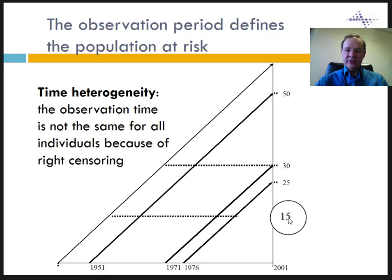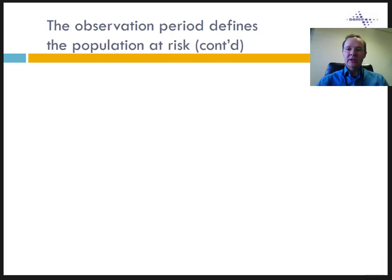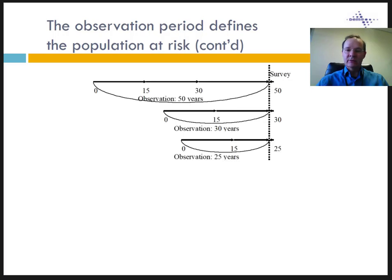This is a fundamental concept that we will use again and again in event history analysis. The three individuals have been observed for 50 years, 30 years, and 25 years. We can represent the diagonal lifelines from the Lexis diagram as horizontal lines. The time heterogeneity in these timelines makes comparison between individuals difficult. The individual observed for 50 years had time to live through many experiences — completing education, marriage, children, several jobs, moving house — while the 25-year-old probably did not live through all these different events and changes in matrimonial, employment, and residential status.